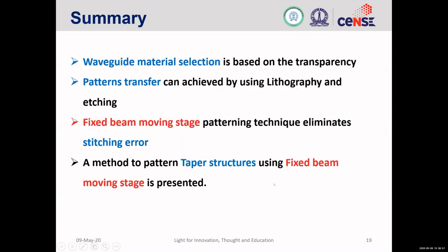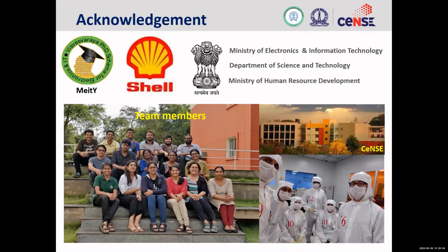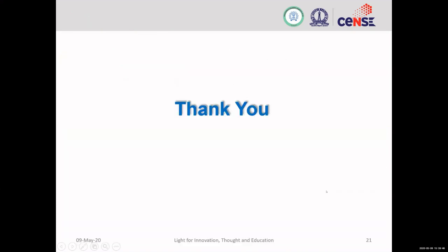In summary, I have explained the criteria for selecting a waveguide material based on transparency, how lithography and etching are combined to transfer a pattern onto a substrate, the Fixed Beam Moving Stage patterning technique that eliminates stitching errors, and a patterning method for tapered structures using only FBMS. I'd like to thank the organizers and my colleagues at IISc Bangalore — this is my group and our lab where we do our experiments. Thank you for your kind attention.